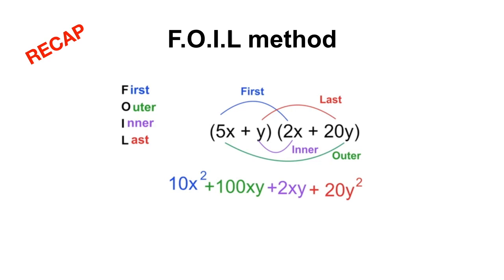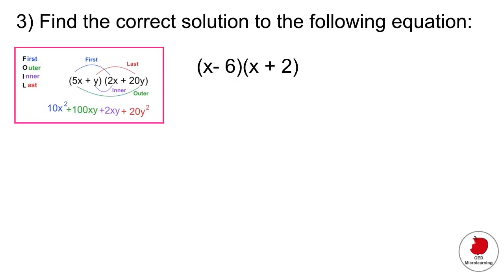Then the O stands for outer, you would take the outer numbers of each bracket. I for inner, you would look at the inner numbers or expressions. And then last, you would look at the last expression in each bracket. That's how you get the FOIL method, that's how you do the FOIL method. We'll leave it there as a little cheat sheet for you.